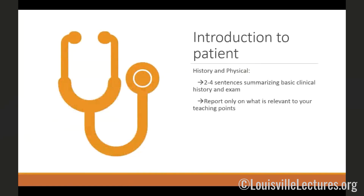Let's talk about the case summary. This is a very concise way to present your patient. You start with a history and physical exam — do two to four sentences summarizing the basic clinical history and exam, and only report on what's relevant to the final points you'll be talking about. We don't need an entire comprehensive metabolic panel or glucose values over 24 hours unless they're relevant. Use the notes you find in the electronic medical record and do not forget vital signs — they are very often relevant and almost always the first thing we see when we see a patient.